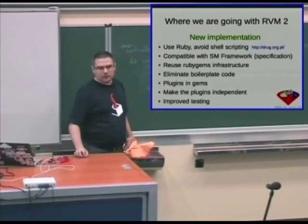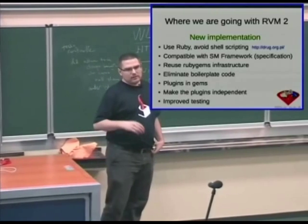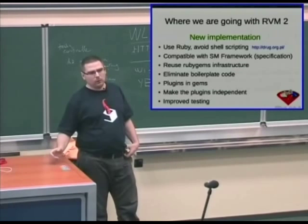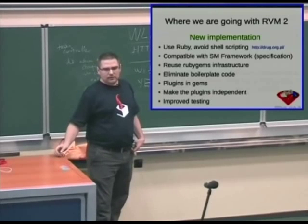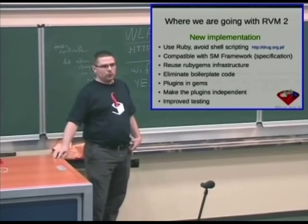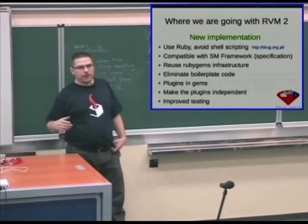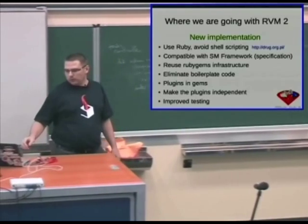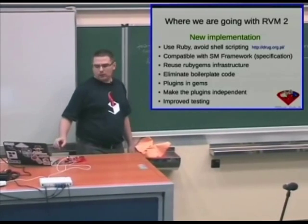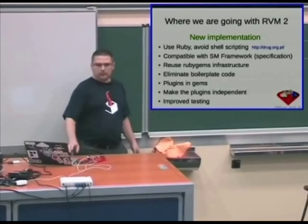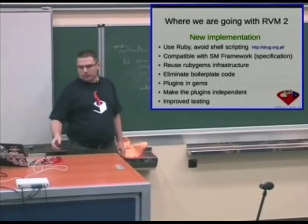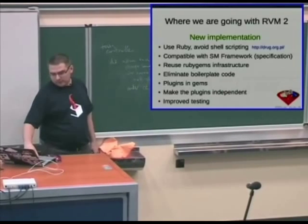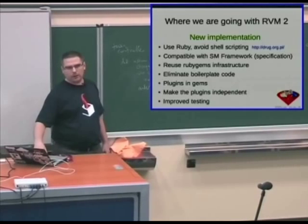We will reuse RubyGems infrastructure. We don't want to provide our own system of plugins and adding stuff to RVM outside. Since we're using Ruby, we can use the existing RubyGems infrastructure — we will install gems which will provide more functionalities, and you can select what parts of Ruby management you want to use. Thanks to switching to Ruby, we will eliminate a lot of boilerplate code. The plugins will be part of the gems. We also need to improve testing, and we will — it's already part of the process, but we want a lot more tests.